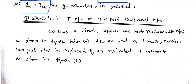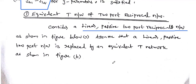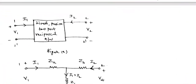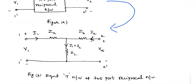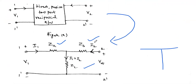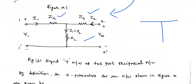We consider one linear, passive, two-port reciprocal network. If this linear passive two-port reciprocal network is given, we can draw the equivalent diagram in the form of a T structure. In this equivalent T network, you can see three elements — impedances ZA, ZB, and ZC — connected in the shape of a capital T. This is the equivalent network of the given two-port reciprocal network. Consider the input port as 1-1' and the output port as 2-2', with input voltage V1, input current I1, output current I2, and output voltage V2.